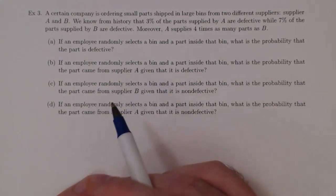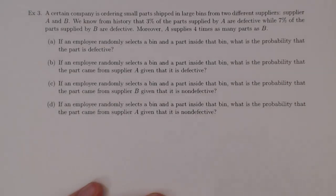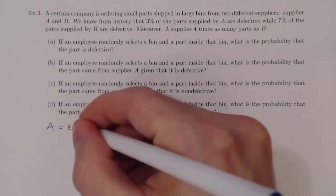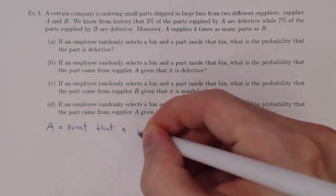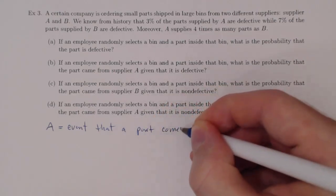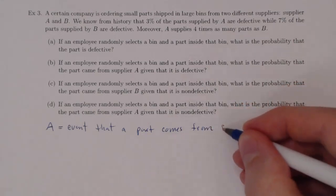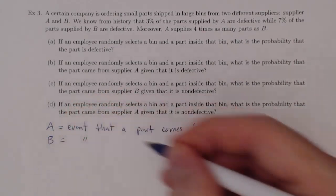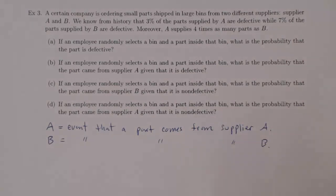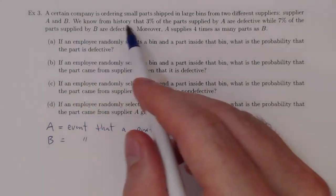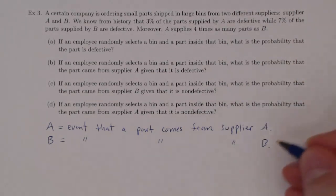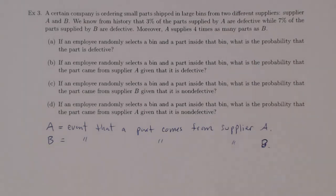Let's label our events. We'll let A equal the event that a part comes from Supplier A, and we'll let B be the event that a part comes from Supplier B. We also have a third event of interest: D is the event that a part is defective.